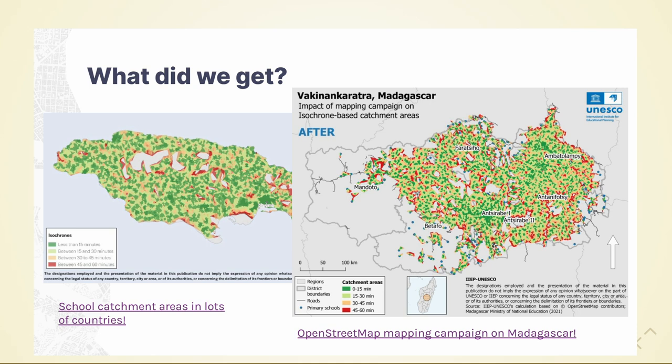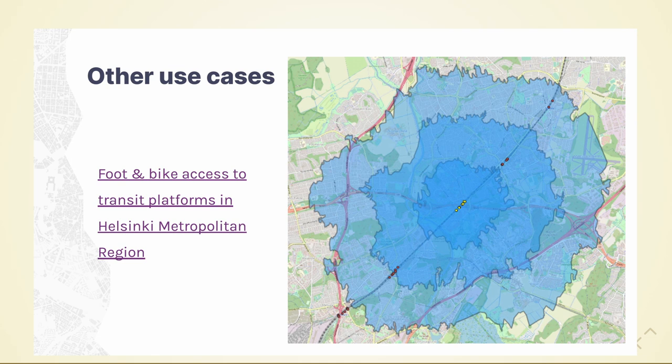In my opinion, it's a nice example of a case where you improve the data and then it might help other people too in the future — it benefits the educational planners, but it also benefits the local OpenStreetMap community. And then one final example, which was my work for the Helsinki Metropolitan Authority to calculate transit access. Luckily, the OpenStreetMap data in Finland is really complete, with information on all the elevators and even underground passages and escalators to train and metro stations.